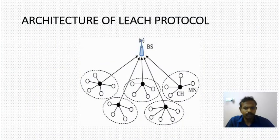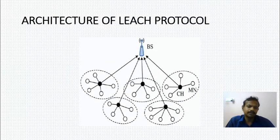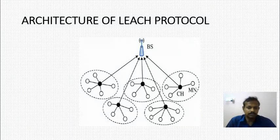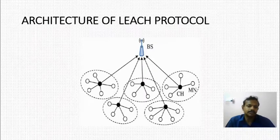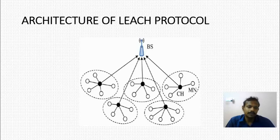In the general architecture of the LEACH protocol, the dotted circles refer to the cluster heads, and the other nodes are non-cluster heads, otherwise known as cluster members. They collect the data and send it to the cluster head, and the cluster head transfers the data to the base station. This is the working principle of the LEACH protocol.